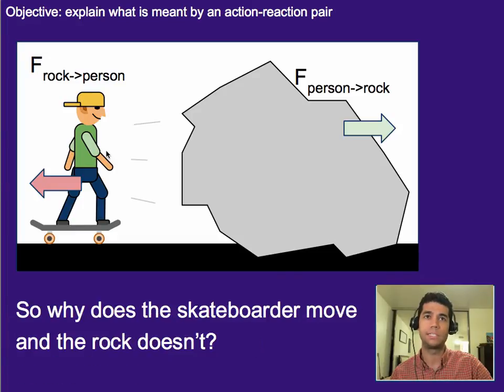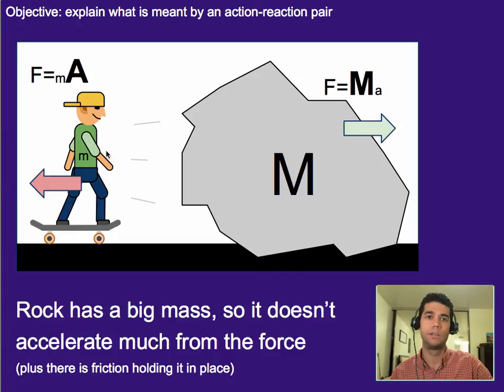All right. Well, even though it's the same size force, what happens is we've got a rock that has a huge mass, and we've got a skateboarder that has a relatively small mass. So for the same force, there's going to be a much larger acceleration for a skateboarder. Then for the same force on the rock, it would result in a much smaller acceleration because the mass is so much bigger.